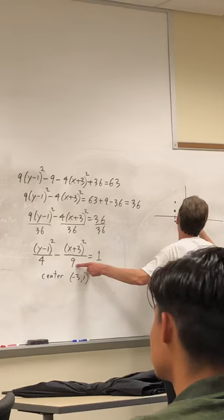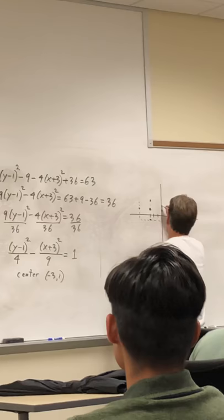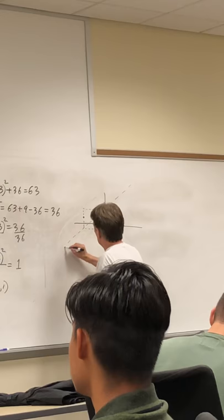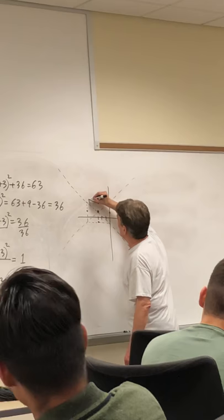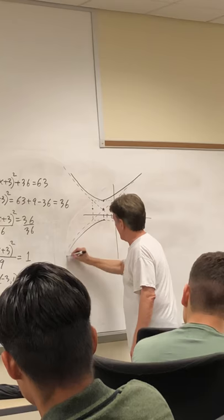And then we build this box. And then we build diagonals. These are going to be the asymptotes. And to graph it we start here and it's going to follow those asymptotes there and there. So that's a graph of the curve.